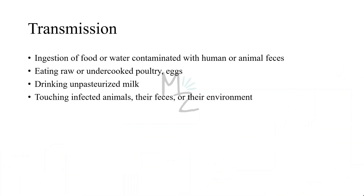Transmission. Salmonella is transmitted by the ingestion of food or water contaminated with humans infected with Salmonella or animal feces, eating raw or undercooked poultry or eggs, drinking unpasteurized milk, or touching infected animals, their feces, or the environment in which they live. Typhoidal Salmonella serotypes can only be transferred between humans and can cause foodborne illness as well as typhoid and paratyphoid fever. Non-typhoidal Salmonella serotypes are zoonotic and can be transferred from animals and between humans.